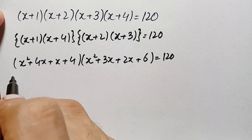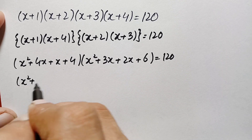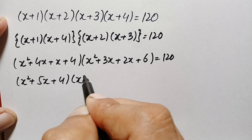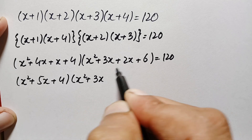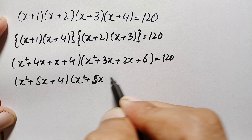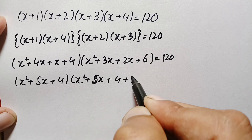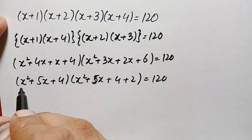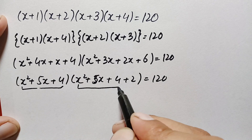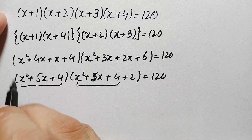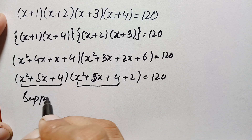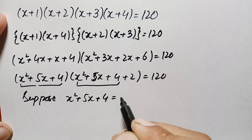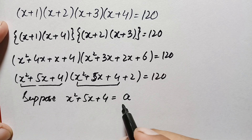Let's simplify both expressions. This becomes (x²+5x+4)(x²+5x+6) = 120. Looking at these two expressions, x²+5x+4 is common in both, so we'll make a substitution. Let us suppose x²+5x+4 equals a new variable, a.